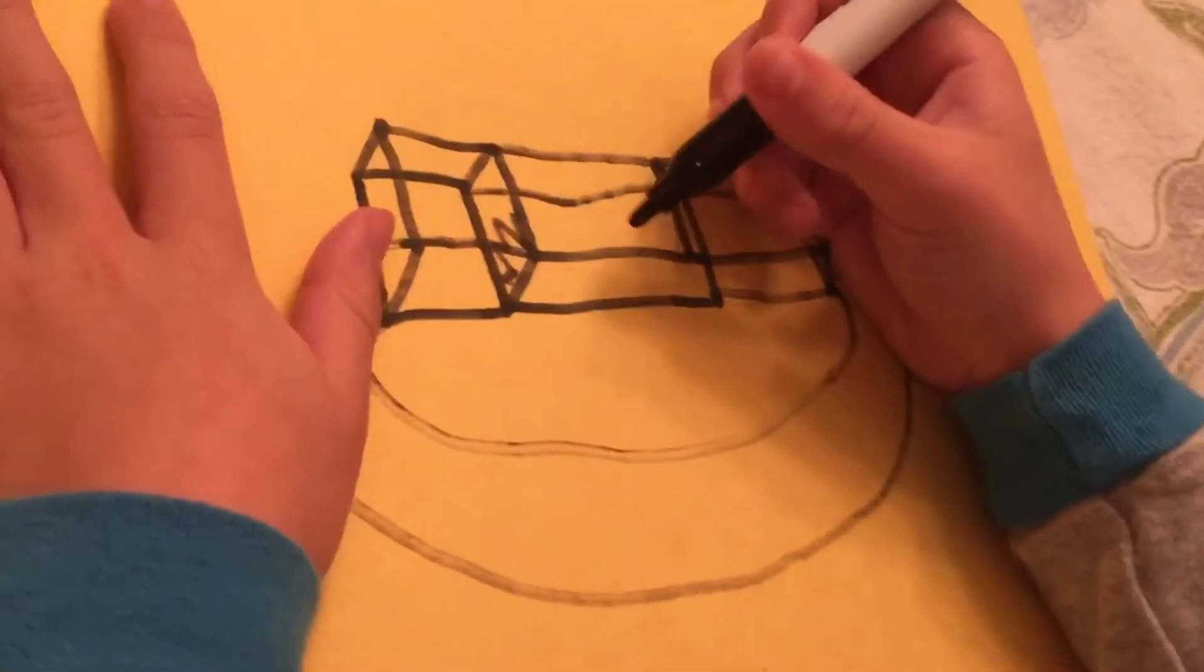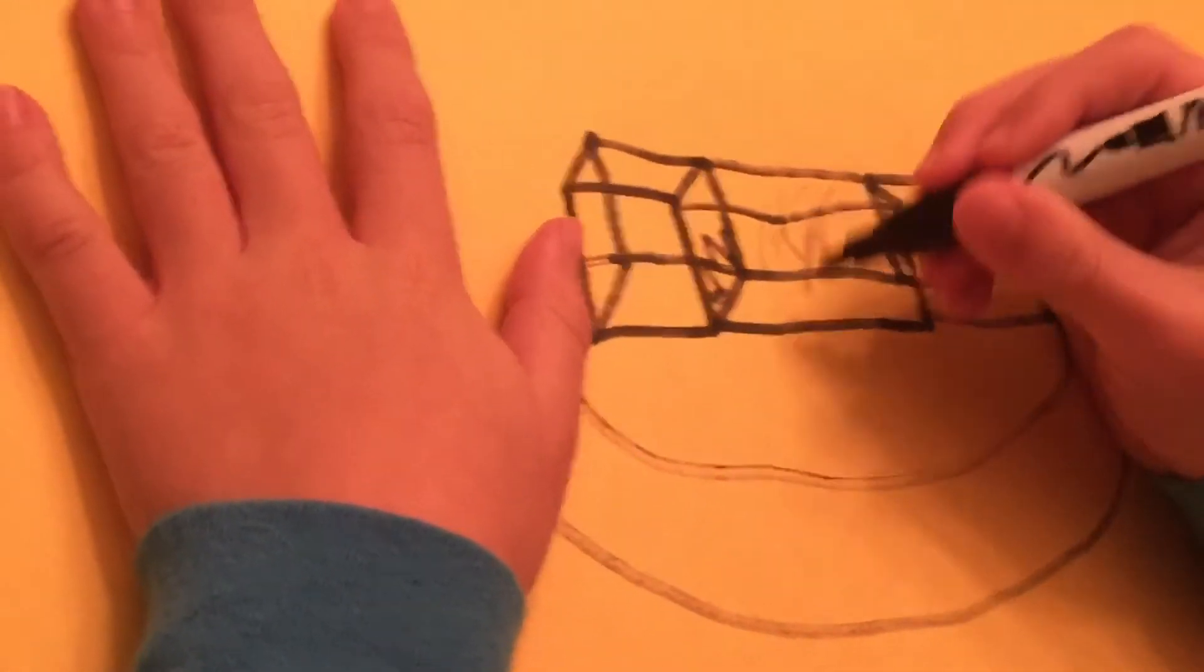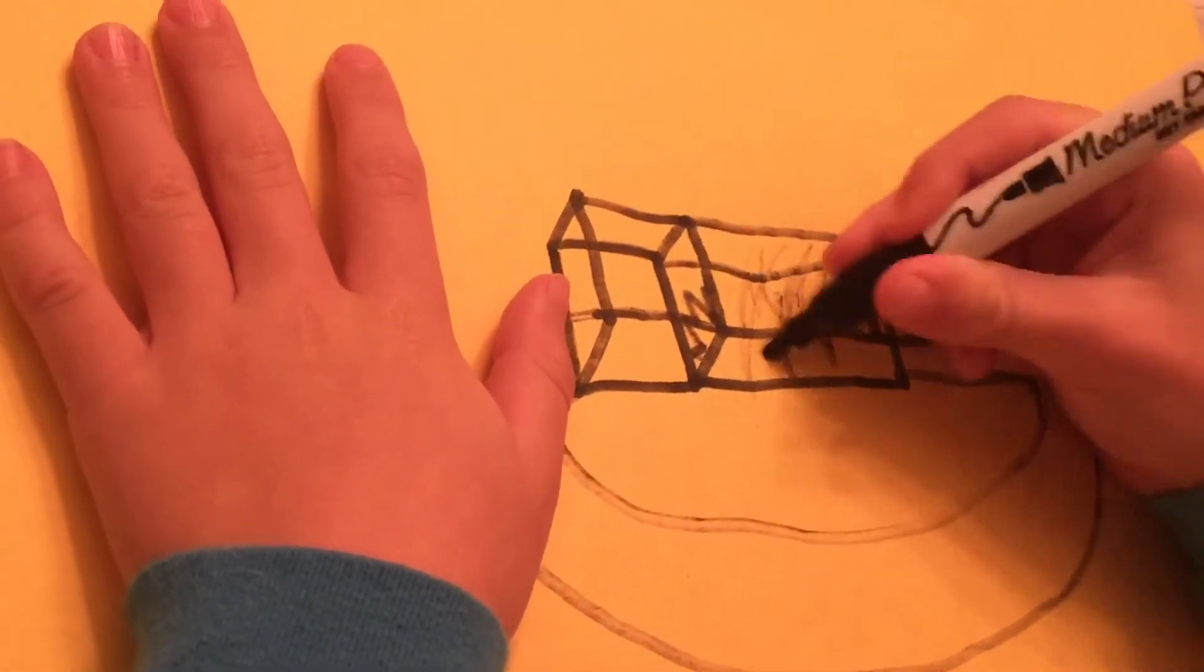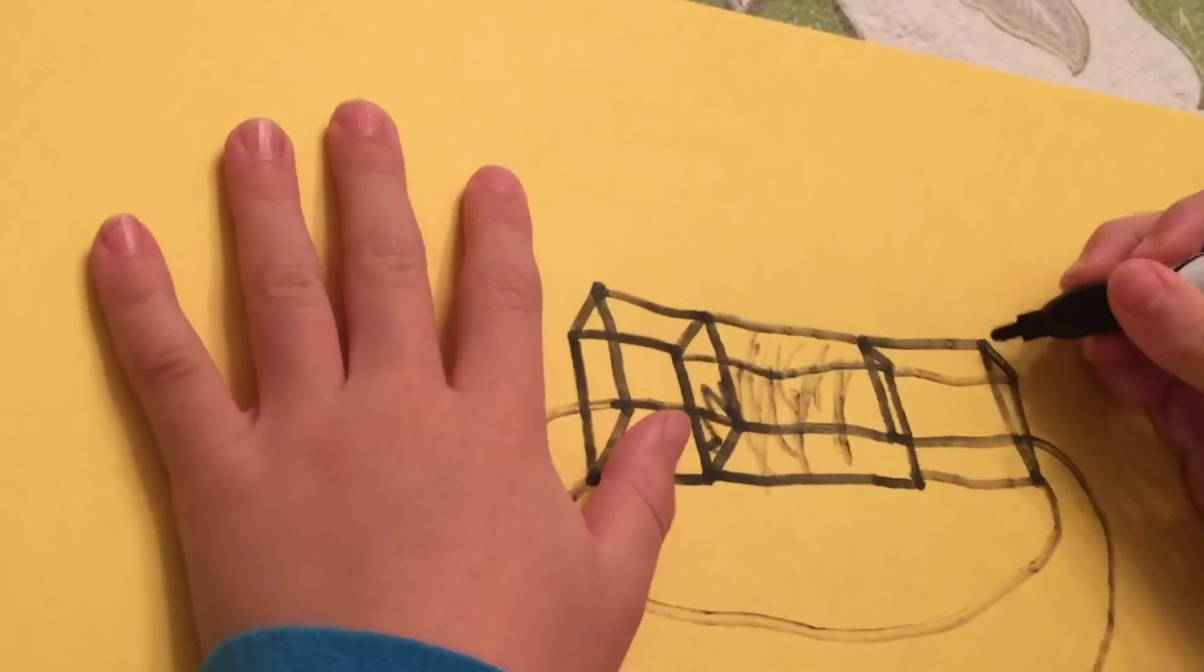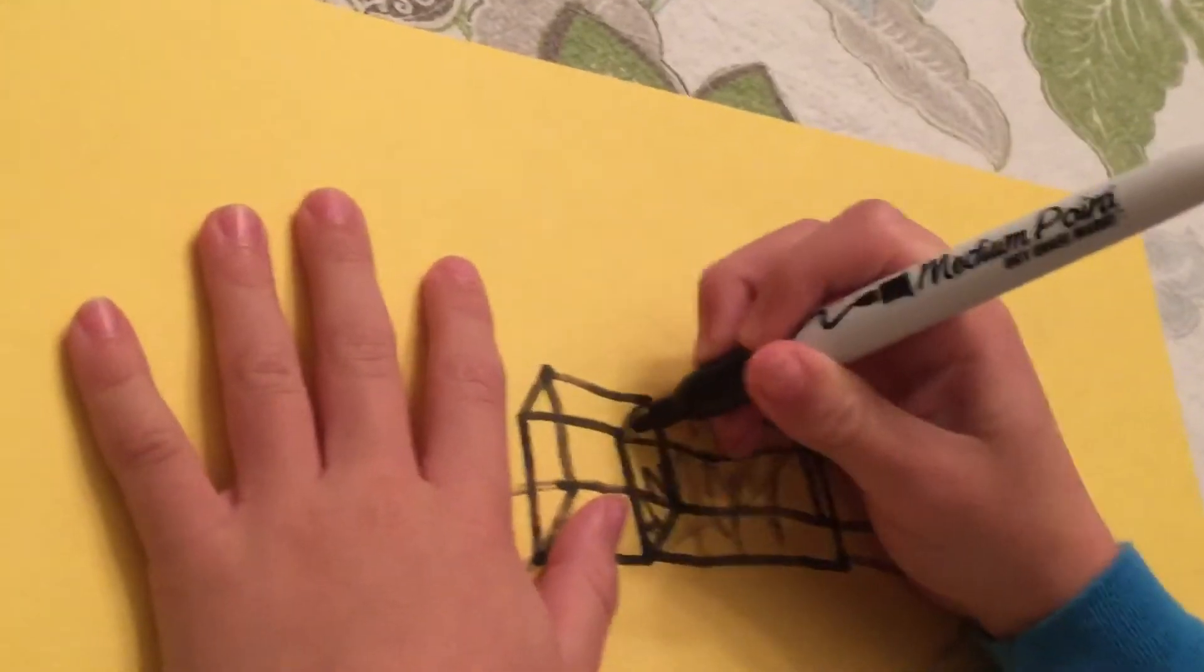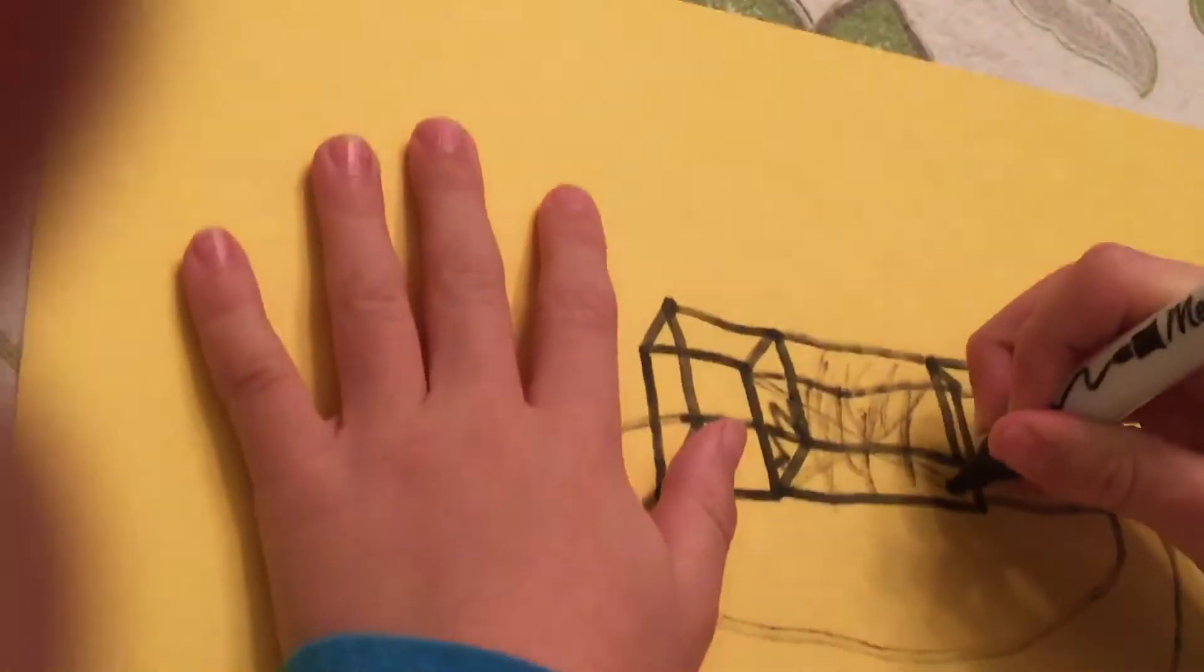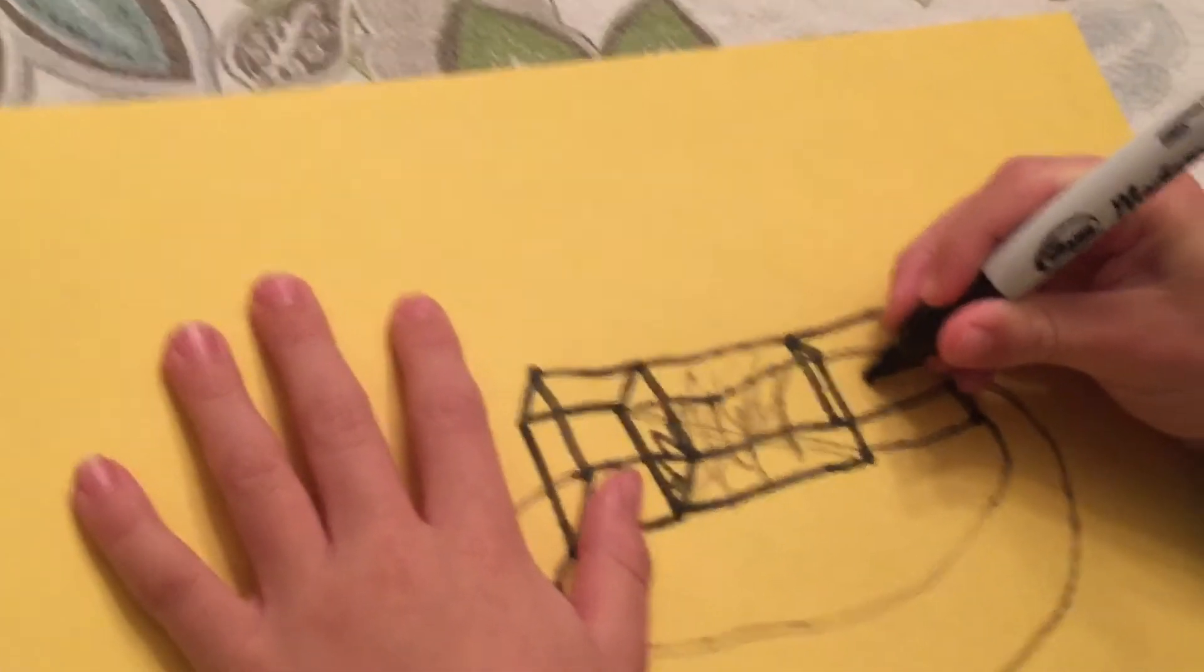And then I like to shade the second block in. And then I do anything on the third block. Well, sometimes I usually do an X on this like that. And now I'll do anything like this.